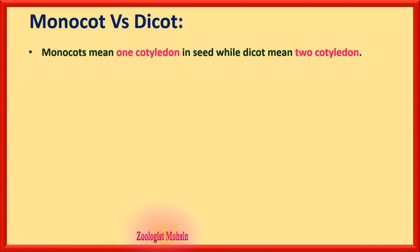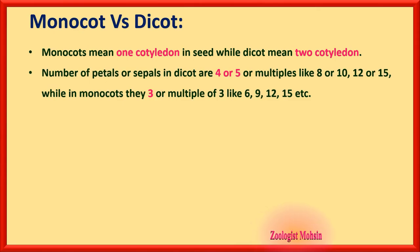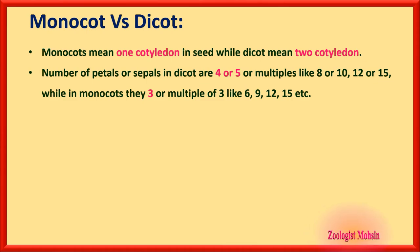The difference between monocots and dicots is very important. Monocot means one cotyledon in the seed, while dicot means two cotyledons — monocotyledonous and dicotyledonous are two subclasses of class Angiospermia. The number of petals or sepals in dicots is four or five, or their multiples like eight, ten, twelve, fifteen, or sixteen. So if a plant is dicot, the number of calyx or corolla members is four or five or their multiples.